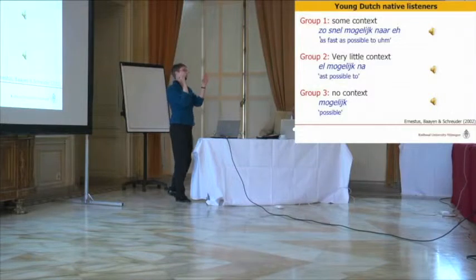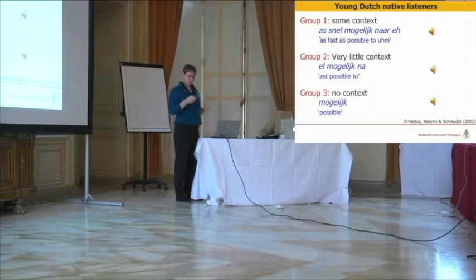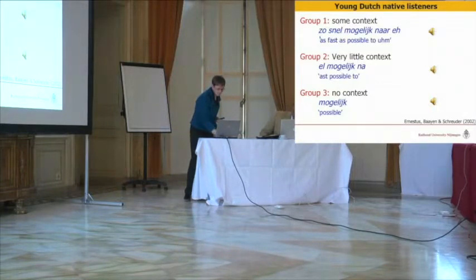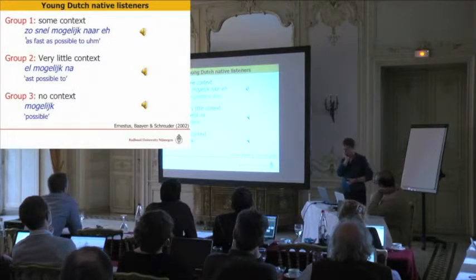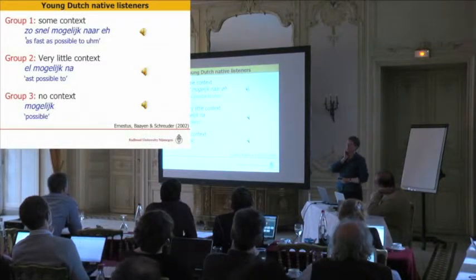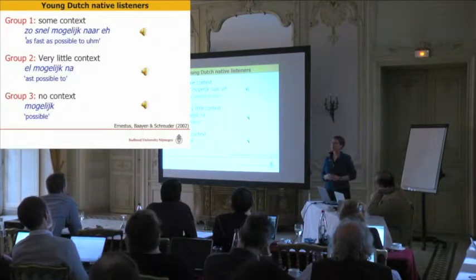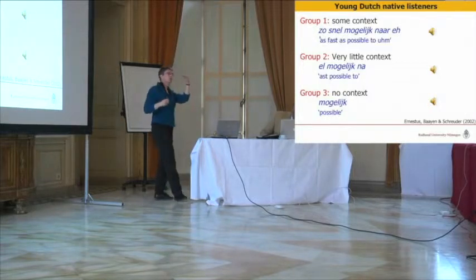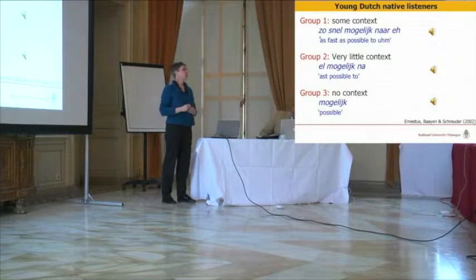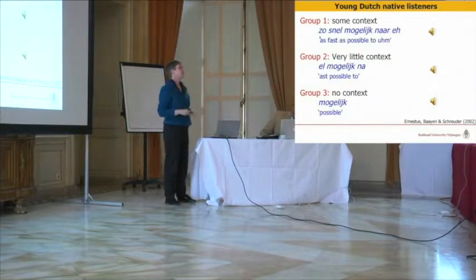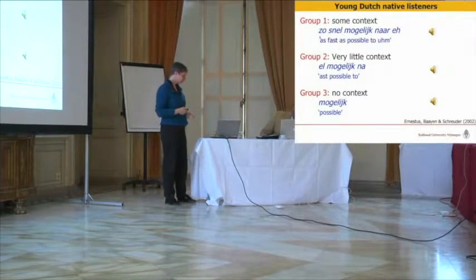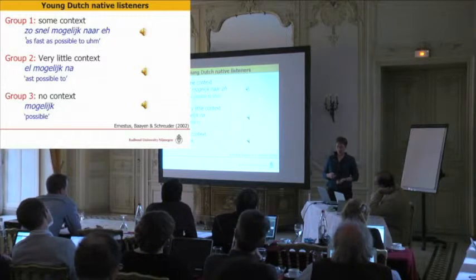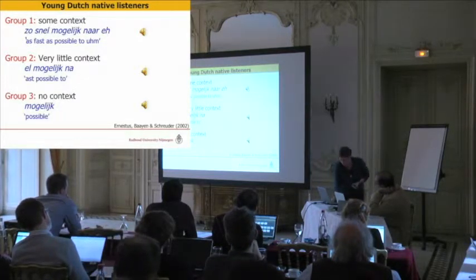Listeners received a whole phrase — at least what was prosodically a phrase — with a target word such as 'mogelijk,' meaning 'possible,' and were asked to write down what they heard. A second group received the same stimuli, but only the target words plus the surrounding vowels and intervening consonants — so phonetic context only, which told them the speech rate and whether assimilation had occurred. A third group received nothing of that at all — just the words in isolation.